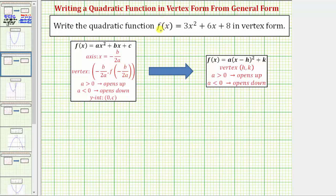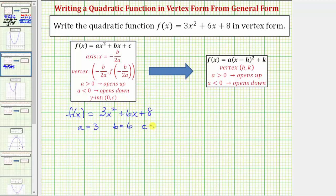Beginning with the given function, we have f of x equals three x squared plus six x plus eight. Now let's identify the values of a, b, and c. A is equal to three, the coefficient of x squared. B is equal to six, the coefficient of x, and c is the constant term, eight.